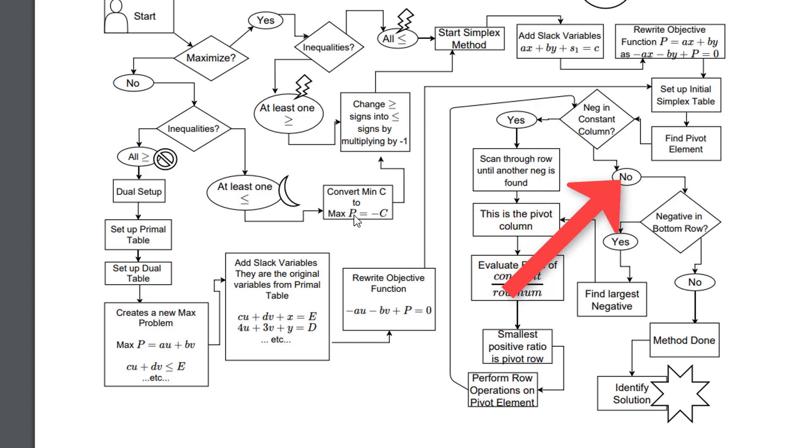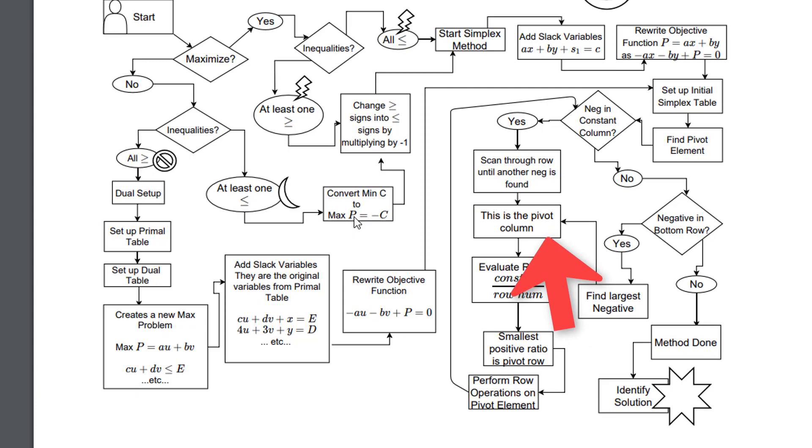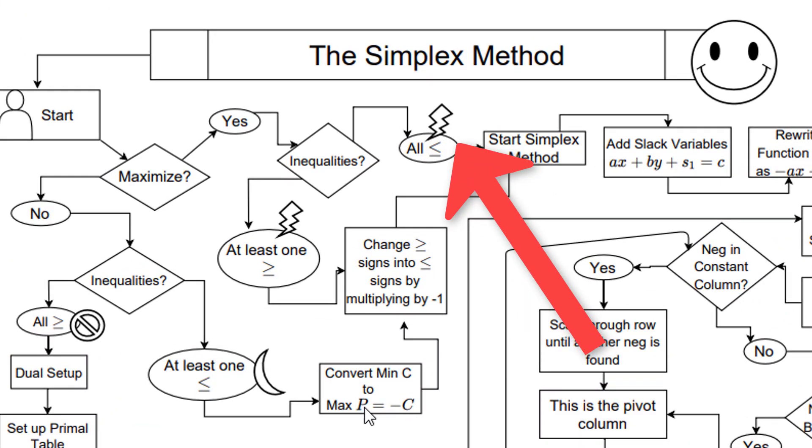Now eventually you'll say no to the negatives in the constant column, and then no to the negatives in the bottom row, in which case it leads to method complete. To identify the solution, you need to go back through the flowchart to identify that icon. For us it was the lightning, but there's lightning, moon, and then there's the no symbol.